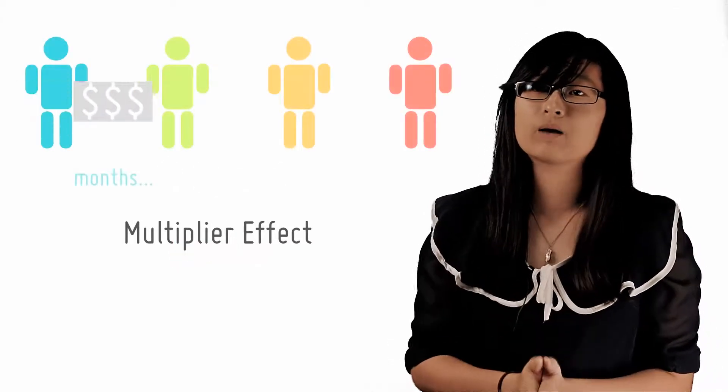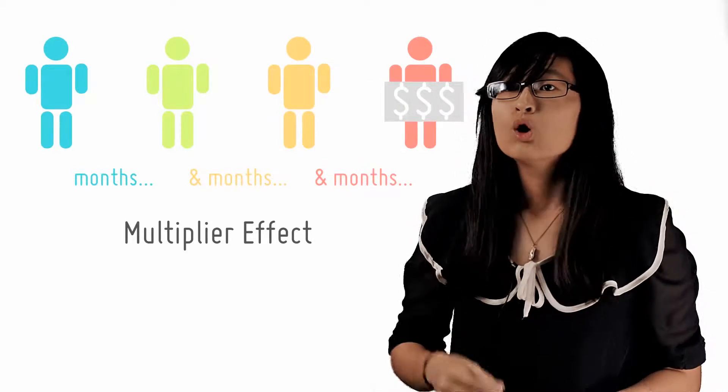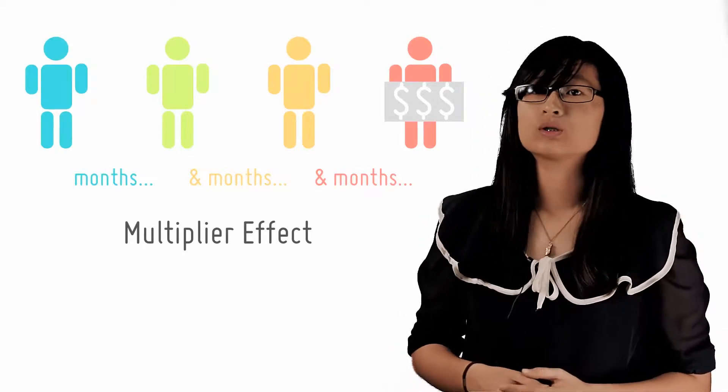Additionally, it takes a lot of time for the multiplier process to work. Each round of spending may take months, so only the effects of the first few rounds of the multiplier may be observable in the short term.